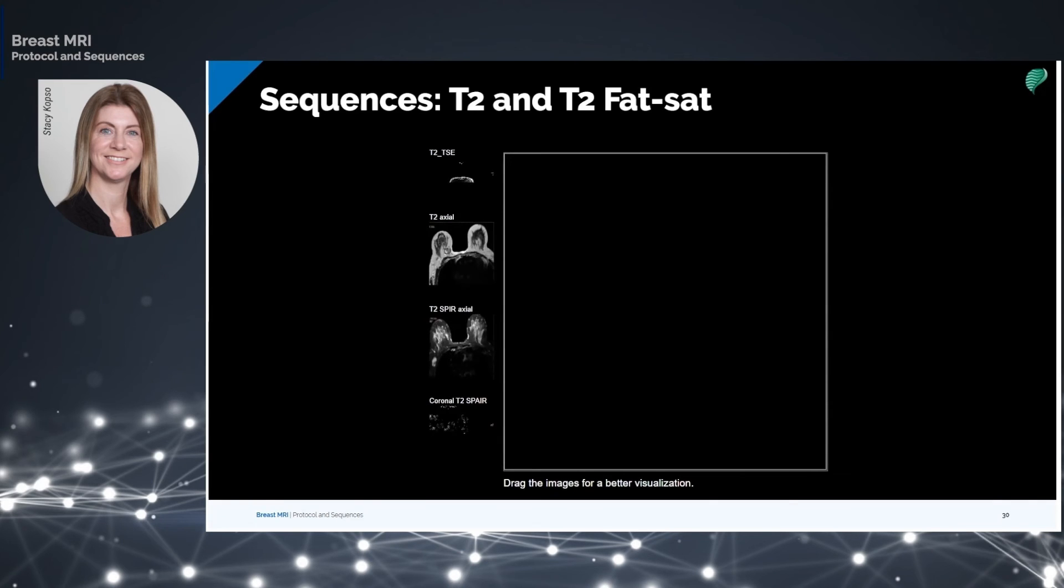T2 TSE and T2 fat suppression. In T2-weighted images, water fluid has hyperintense signal. That is why in T2, water-containing lesions or autonomous lesions have intense signals. These lesions can vary from cyst or inflamed lymph nodes to edema surrounding a malignant tumor and fat necrosis.